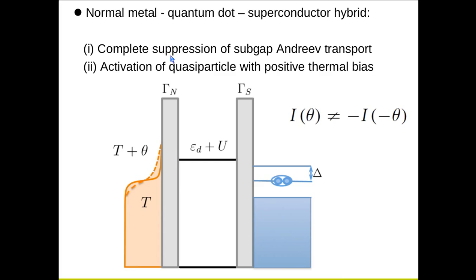The quasiparticles can be activated only with positive thermal bias. Because in this case, the Fermi function broadens, and hence there are thermally excited quasiparticles which can tunnel through the system.